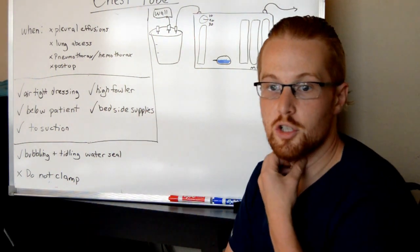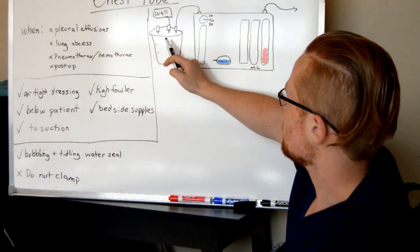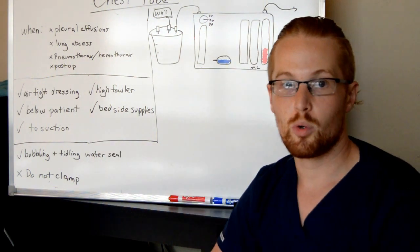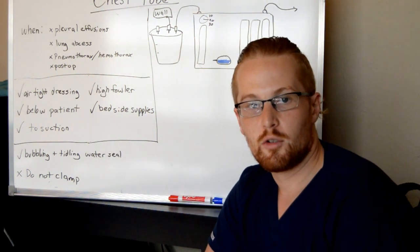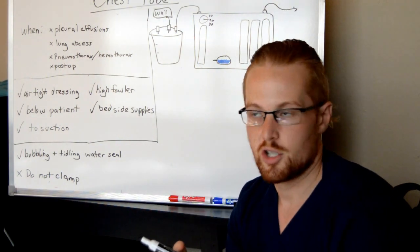I just want to show you a little bit about the system. So, you connect the wall tubing to the canister, and then the canister to the chest tube box. Now, this is going to be on the floor. You want the box to be below the level of the patient, just like a Foley should be below the patient's bladder, this should be below the patient's chest.